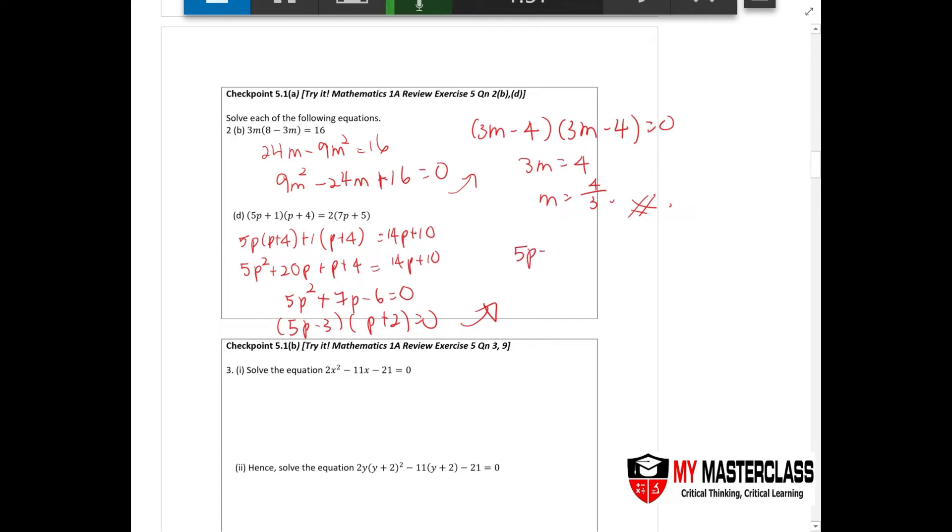For algebra it's always about your foundation. Once your foundation is settled, all of this shouldn't be a problem. So you have 5p equals to 3, p equals to 3 over 5, then you have p plus 2 equals to 0, so p equals to negative 2. You should have two numbers over here.